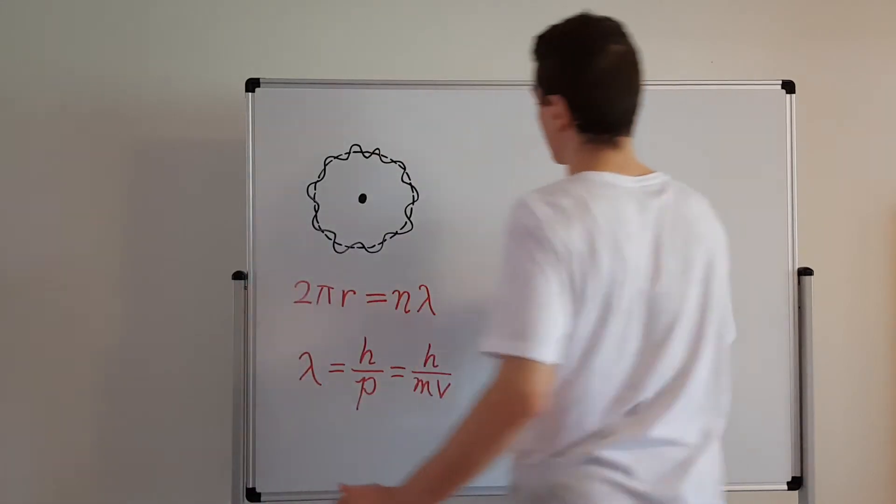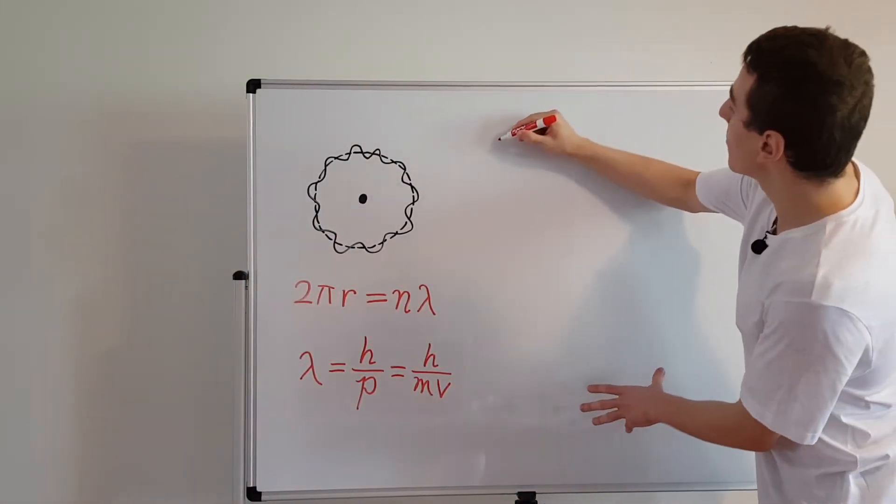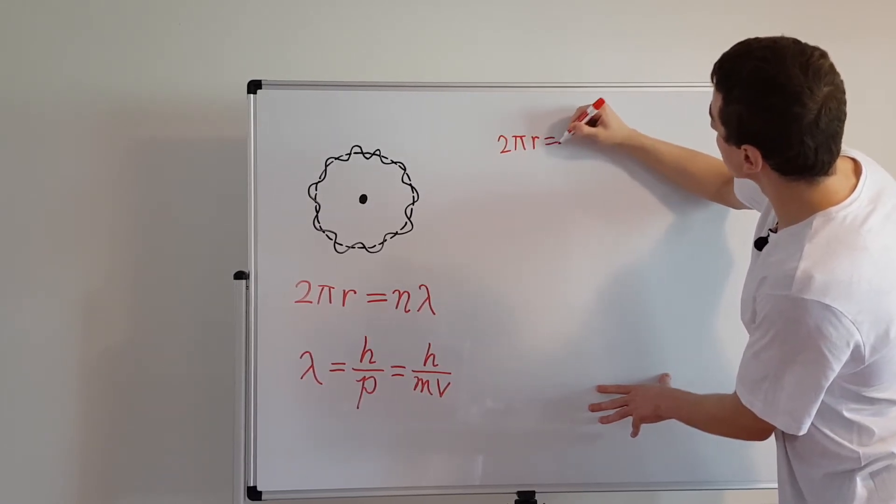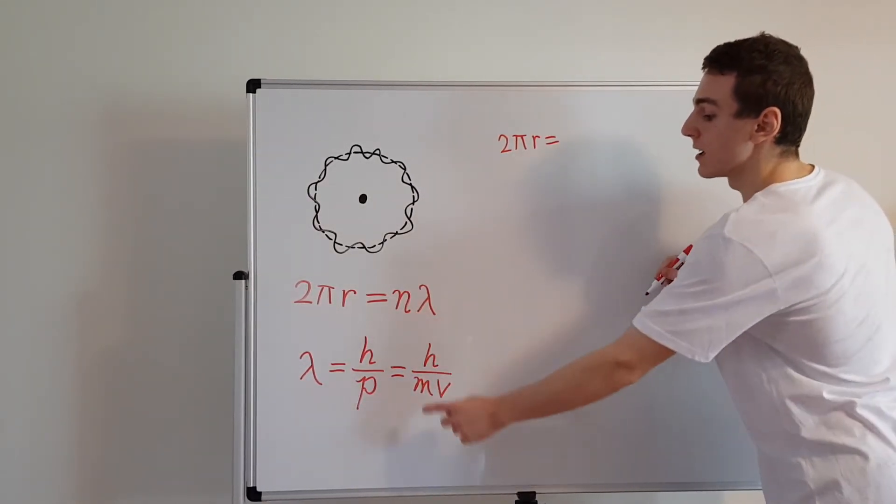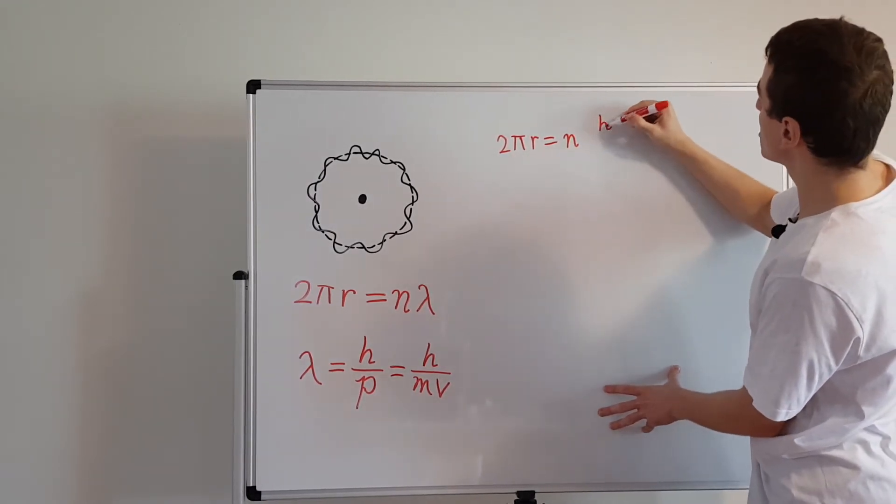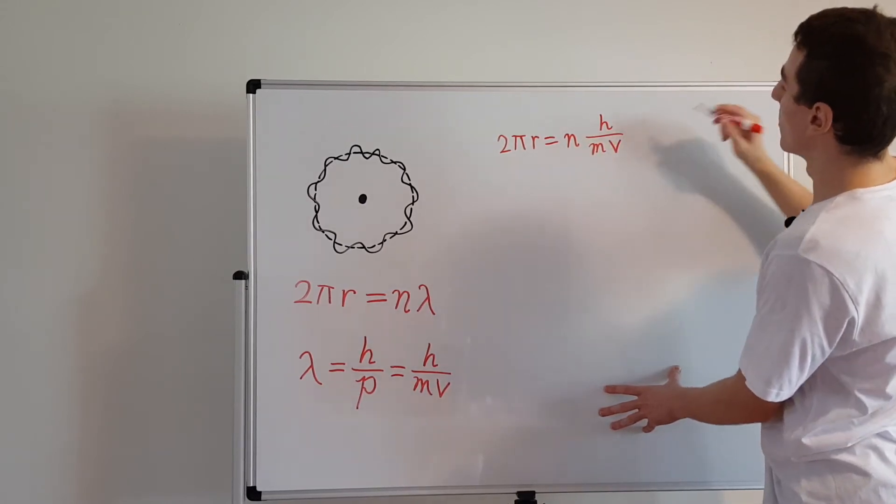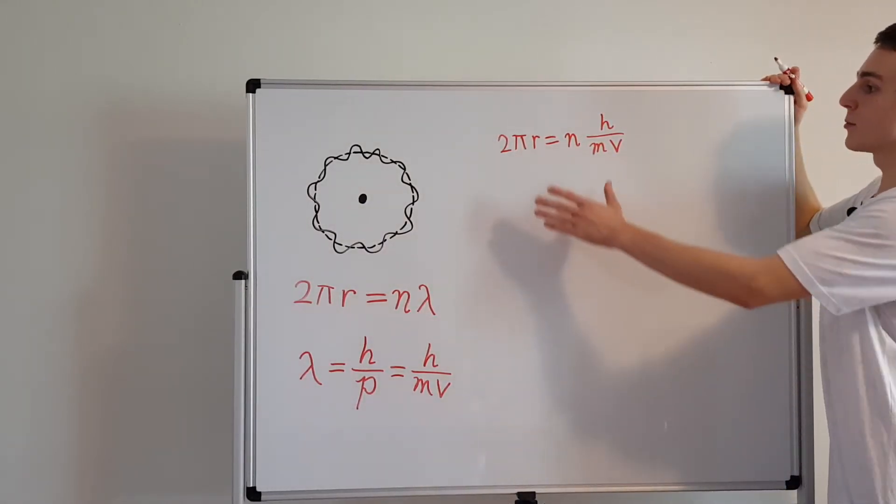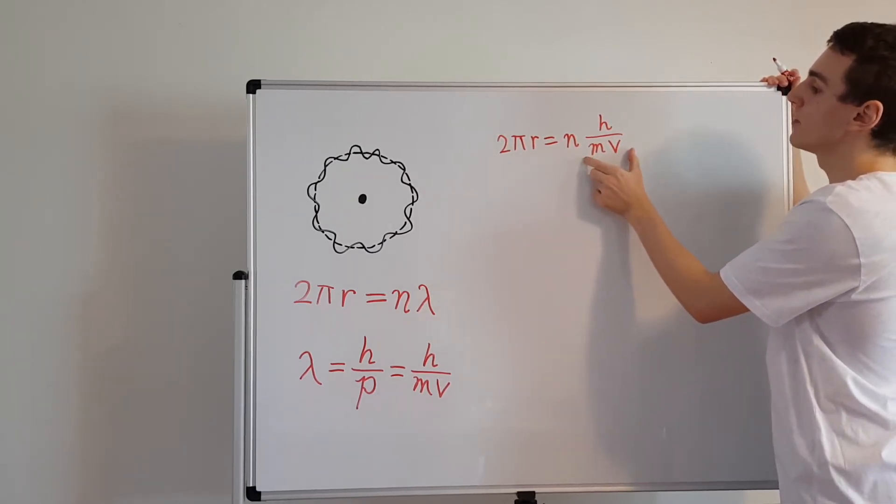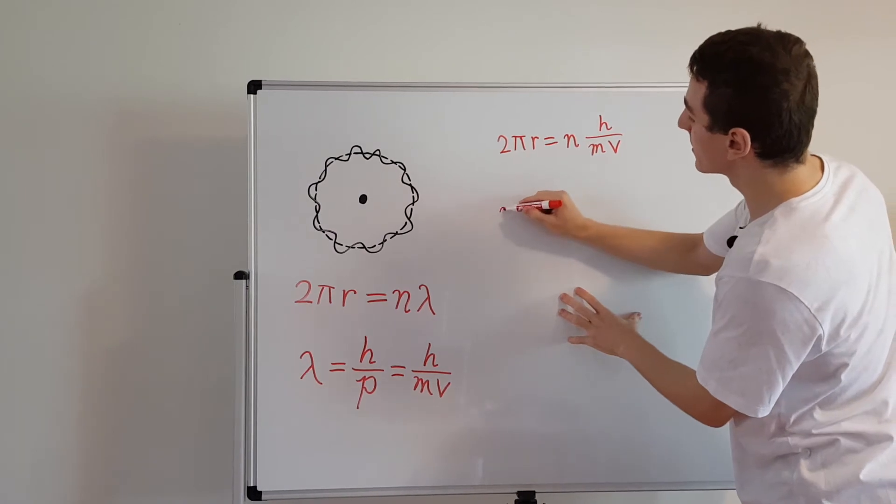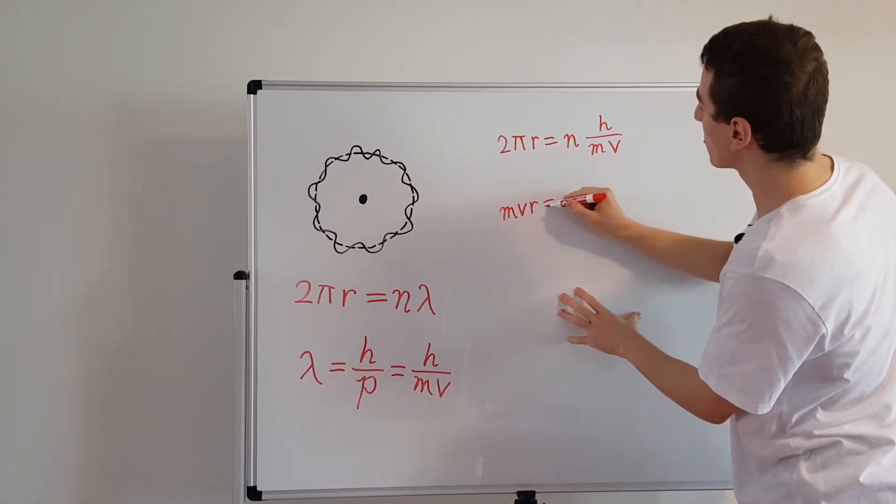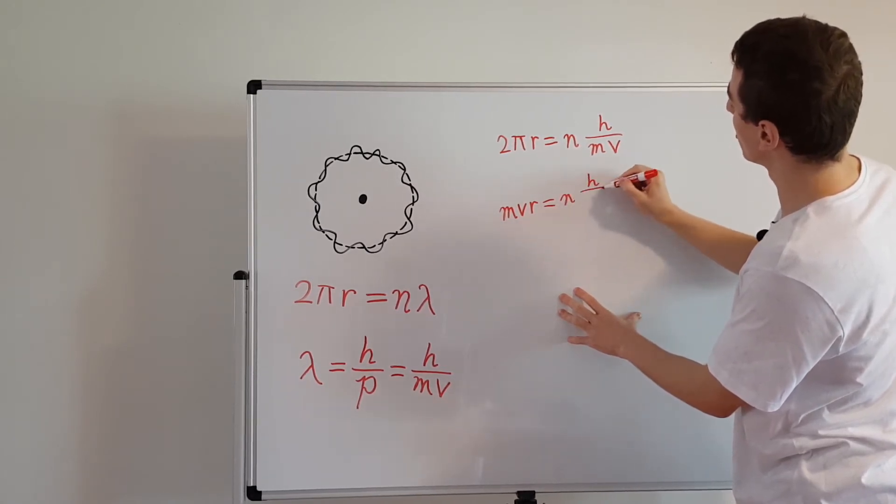So let's go ahead and substitute this expression for lambda into this little condition that we have from this diagram. I'll do that over here on the other side. So what we can do is we can write the circumference 2 pi r as being equal to n times this expression over here. So we have n times h over mv. But have a look at this. We can do some little rearrangements, and we can move this 2 pi down to this side, and we can move the mv over to this side. And that's going to give us mv r is equal to n times h on 2 pi.